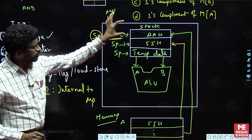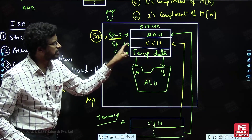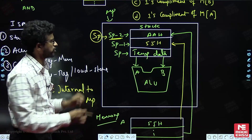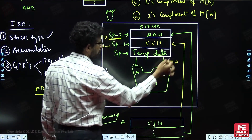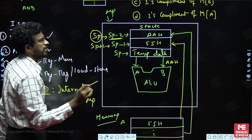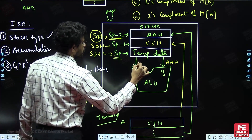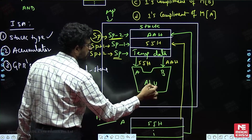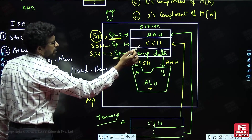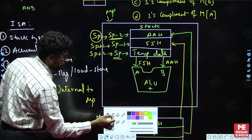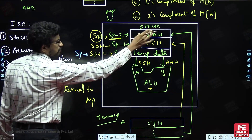For ADD: the first pop brings AAH into one input of the ALU (SP becomes SP+1), and the second pop brings 55H into the other input (SP becomes SP+2). The addition operation is then performed. After adding, the result is stored back at the first memory location — at the top of the stack — and SP becomes SP minus 1.